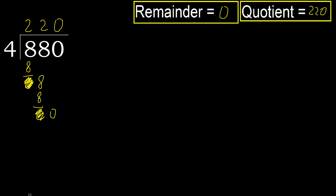880 divided by 4 is 220. Additional problems: 880 divided by 3.5, 880 divided by 4.5, 980 divided by 4.5.